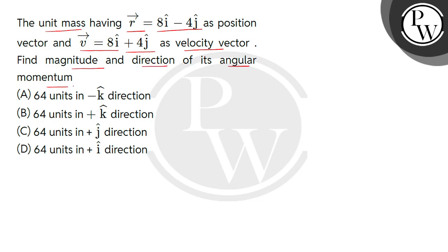Given here unit mass, it means m equals to 1 kg. Given here position vector of this body as 8i cap minus 4j cap and given here velocity vector v vector as 8i cap plus 4j cap.